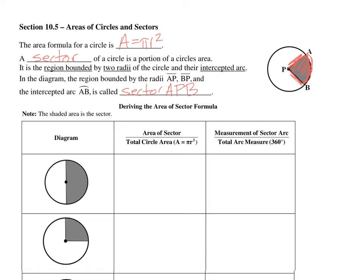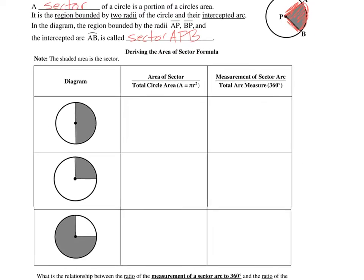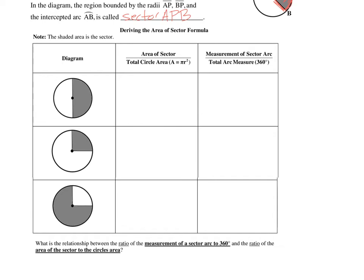Now we're going to derive the area of a sector formula. If the sector is half of a circle, its area is half the area of the full circle: one-half times pi r squared. The pi r squared values cancel out, leaving one-half.